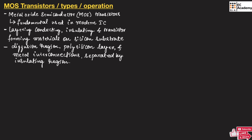A layer of conducting material, insulating material, and transistor material is formed on a silicon substrate to make a MOS transistor. It consists of different regions like diffusion region, polysilicon layer, and metal interconnections, and these regions and connections are separated by an insulating region.